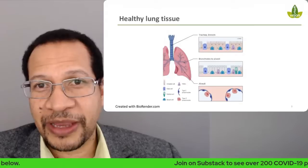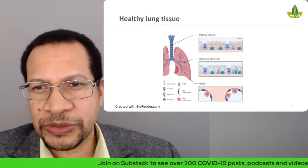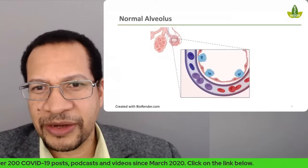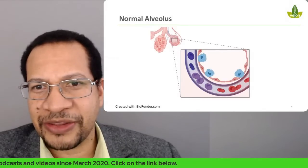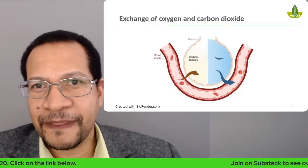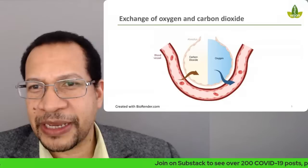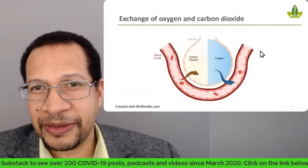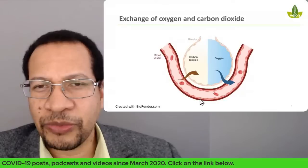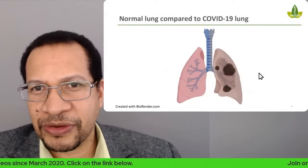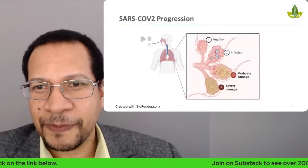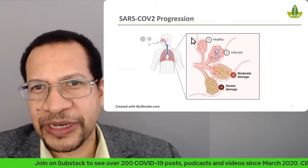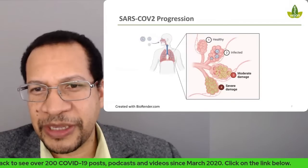Here we have some of the slides I'd gone through. This is a picture of healthy lung tissue. This one here is a picture of the alveolus — the little sacs of air inside the lungs — and why they are so important with regards to understanding the severity of the disease in COVID-19. This here is just showing the exchange of oxygen and carbon dioxide. And this is looking at a healthy lung versus a COVID-19 lung, and the stages of how the inflammation occurs, from healthy to quite severe inflammation in the lungs.